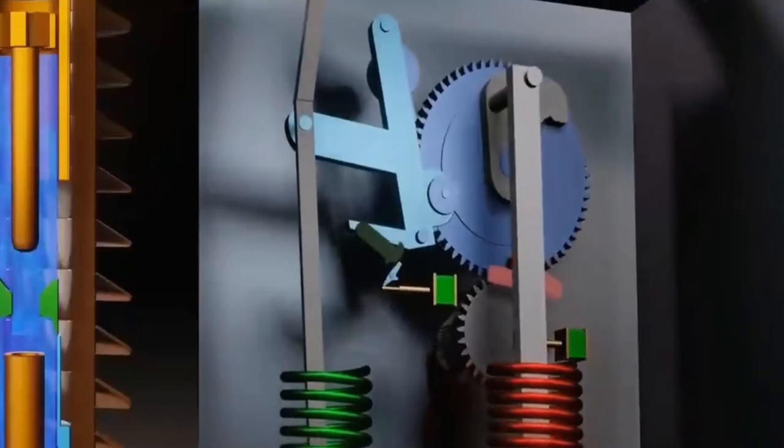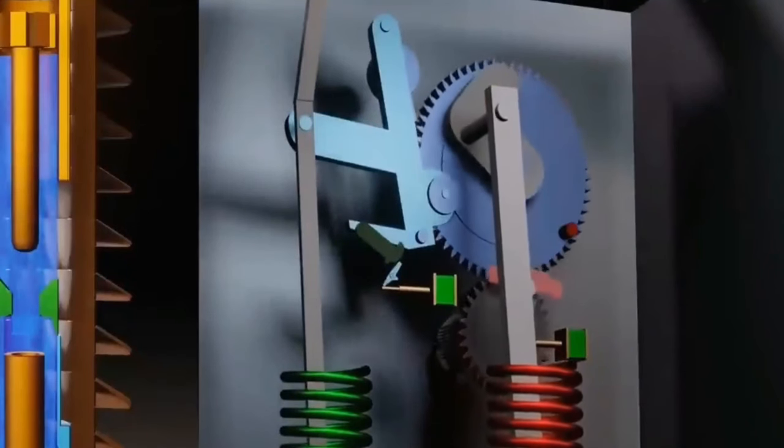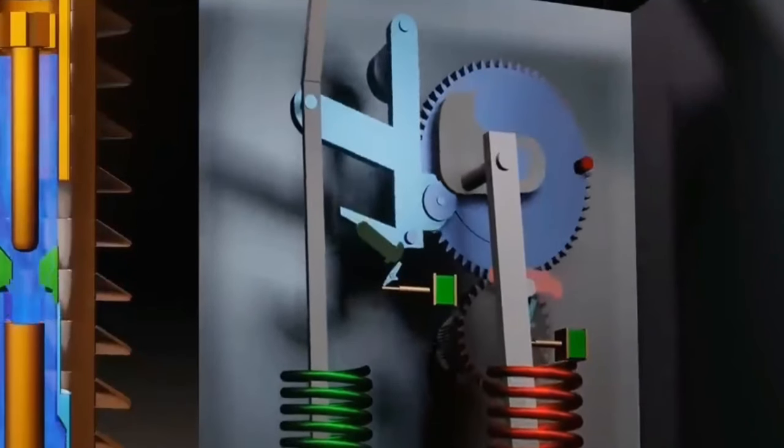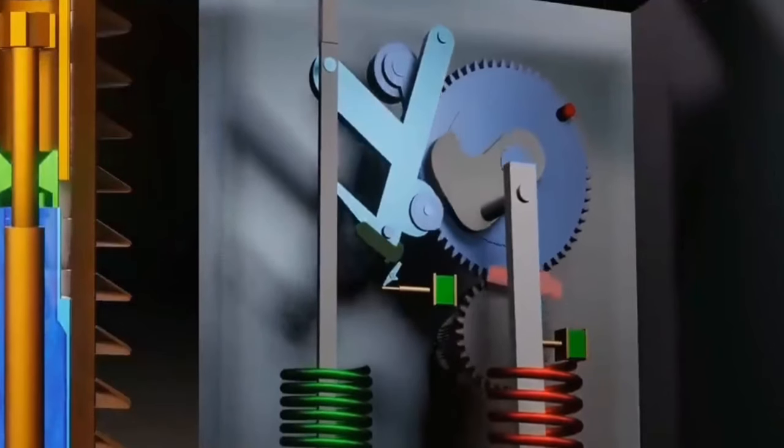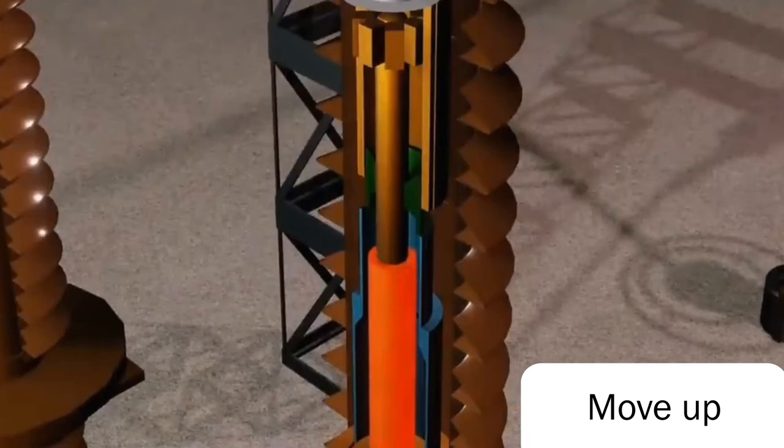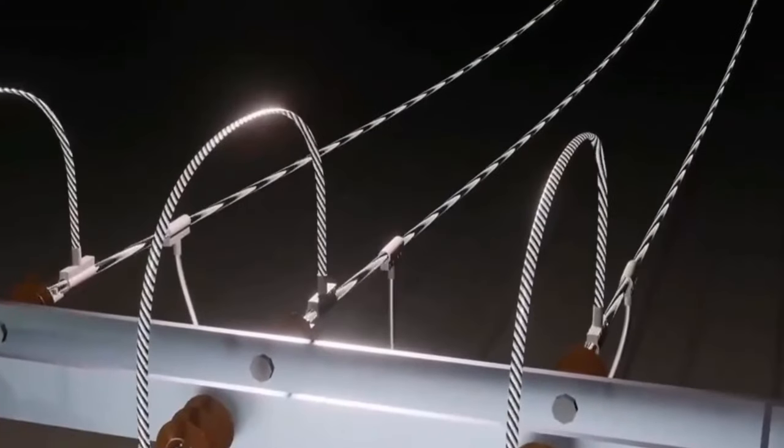When released, under the action of the spring, it will start the rotation of the gear above, pulling up the lever on the left and compressing the spring on the left. This causes the piston of the circuit breaker to move up, connecting the entire transmission line.